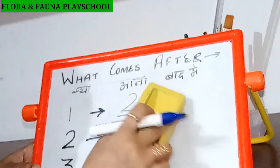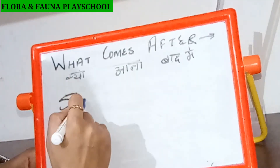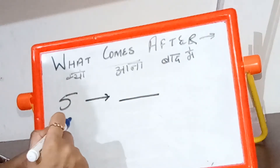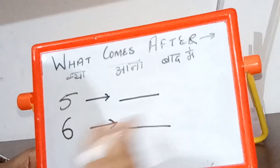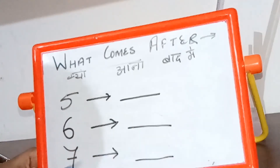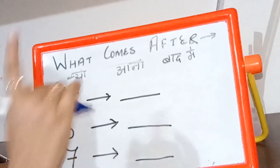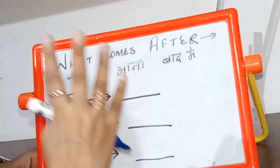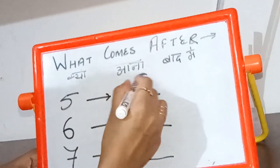Aur bhi counting kareenge. What comes after five? Tell me. Next question is six. What comes after six? And what comes after seven? Five ke baad kya aata hai? Count kariye. One, two, three, four, five, six. Yes. Six.